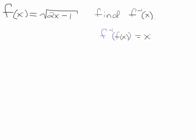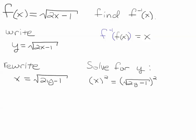All right, so the first thing we do is we're going to write this as a curve y equals the square root of 2x minus 1. And then we're going to rewrite it and we're going to swap x and y, and then we're going to solve for y.